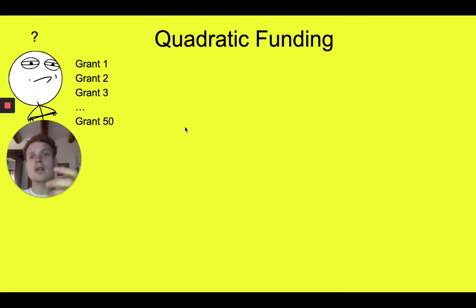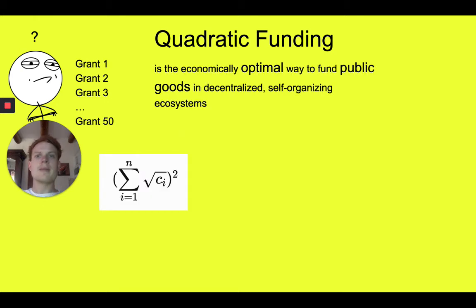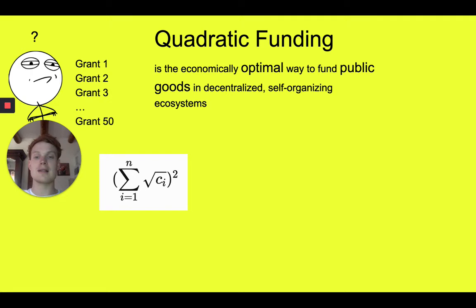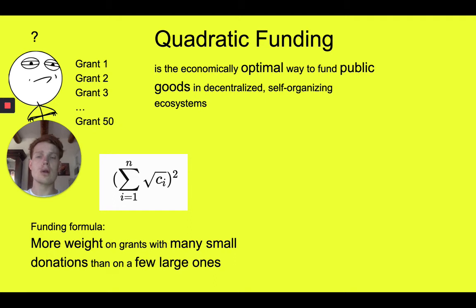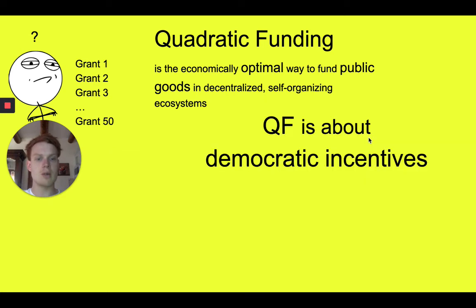Imagine a similar case with quadratic funding when we have 50 different grants. Quadratic funding is the economically optimal way to fund public goods in a decentralized, self-organizing ecosystem. So how does that work? Well, if we look at the funding formula, there's more weight on grants with many small donations than on a few large ones. And we have absolutely the perfect visual to help you understand what's going on here.